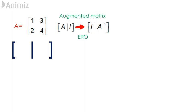So, we have matrix A containing the elements 1, 3, 2, 4 on the left and I which is the identity matrix 1, 0, 0, 1 on the right. The first row here is referred to as row 1 written as R1 and the second row is referred to as row 2 written as R2.